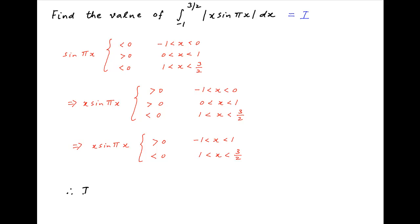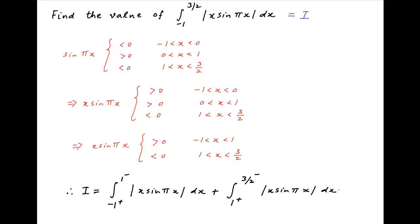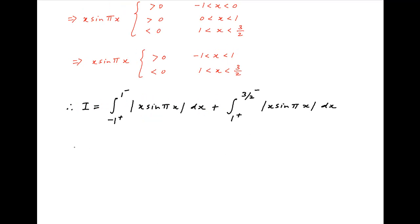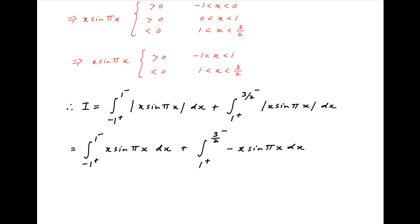Therefore the given integral, denoted by I, can be broken into two components. The first component is the integral from -1 to 1 of |x·sin(πx)| dx, and the second component is the integral from 1 to 3/2 of |x·sin(πx)| dx. Between -1 and 1, x·sin(πx) is positive, so |x·sin(πx)| can be replaced with x·sin(πx). When x lies between 1 and 3/2, x·sin(πx) is negative, so |x·sin(πx)| is replaced with -x·sin(πx).